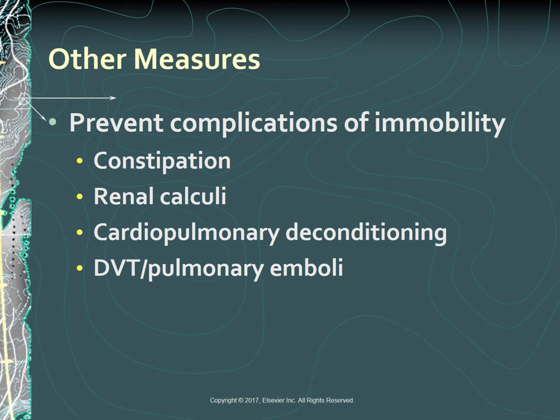Patients often have reduced mobility as a result of a fracture. Plan care to prevent the many complications associated with immobility. Prevent constipation by increasing patient activity, maintaining high fluid intake of more than 2,500 mLs per day unless contraindicated, and a diet high in bulk and roughage such as fresh fruits and vegetables. If these measures are not effective in maintaining normal bowel elimination, administer stool softeners, laxatives, or suppositories. Maintain a regular time for elimination to promote bowel regularity.